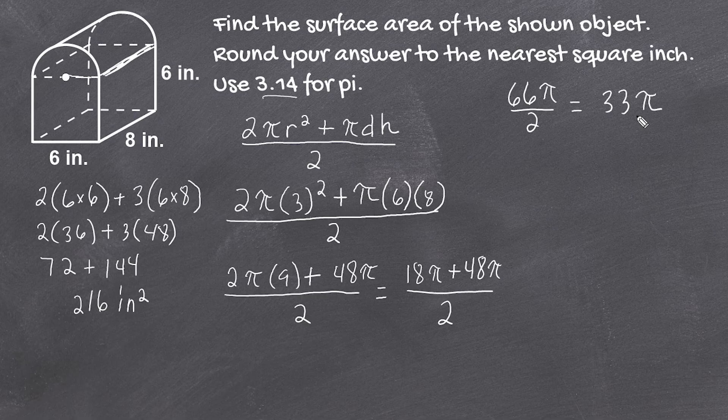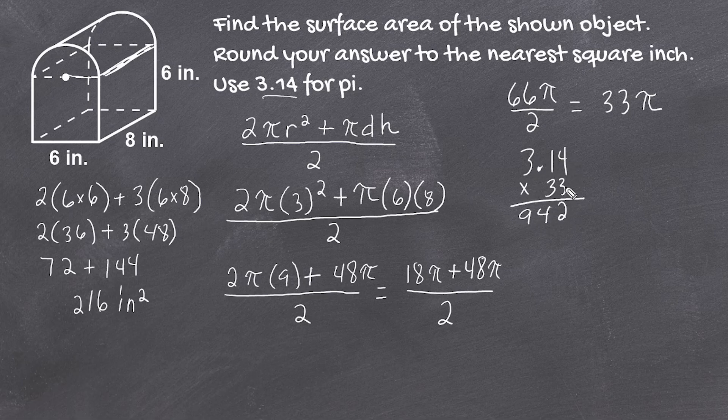Now we substitute pi with 3.14 and multiply by 33. 3 times 3.14 is 9.42, and another 3 times 3.14 is 9.42, giving us a total of 103.62 square inches.